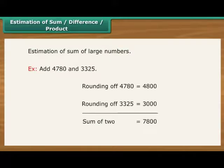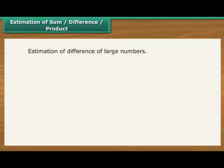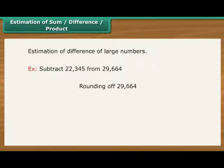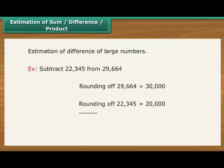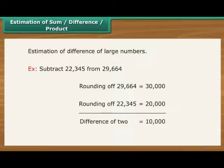Estimation to nearest number can help in the estimation of the difference of two large numbers. For example, subtract 22,345 from 29,664. Rounding of 29,664 would make it 30,000. Rounding of 22,345 would make it 20,000. Difference of two is equal to 10,000.